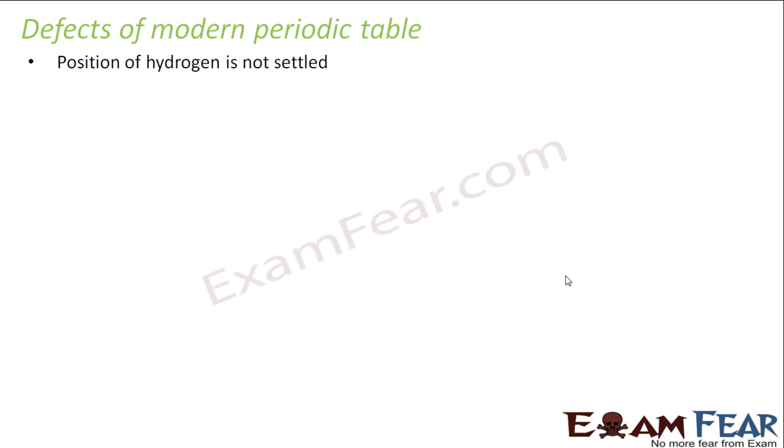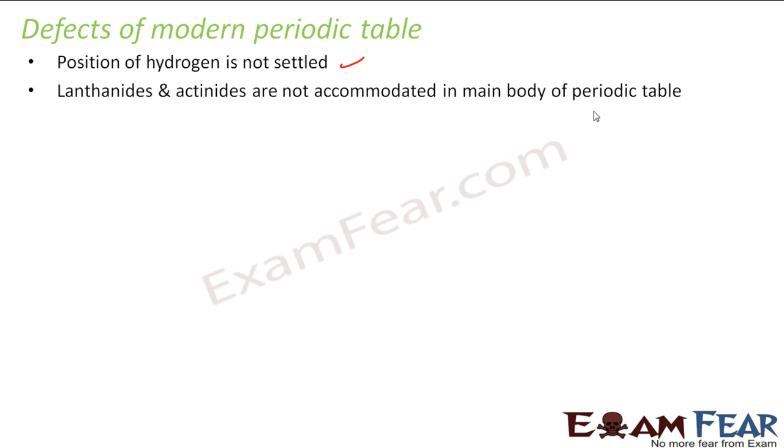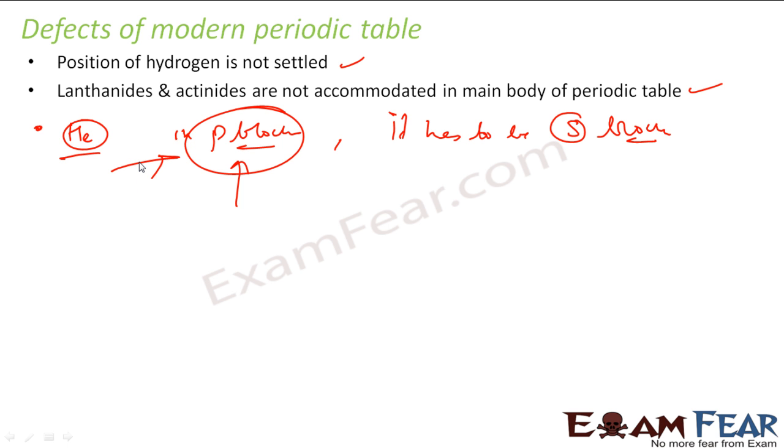But there are some defects also. One is the position of hydrogen is unclear. The second is the lanthanides and actinides are not occurring in the main periodic table. And the third thing is helium. Helium is in P block, but according to electronic configuration, it has to be in S block. So there is an anomaly. Helium should be in S block, but they have placed it in P block because helium has characteristics similar to P block.